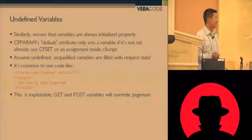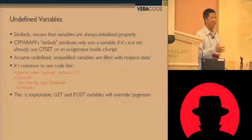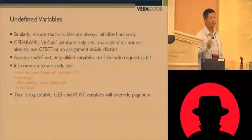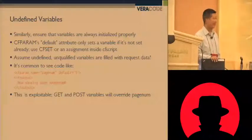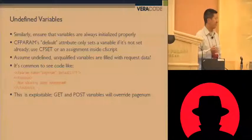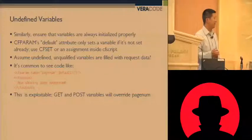For example, you have 'cfparam name equals page_num default equals one.' What that's going to do is say: if page_num is not already defined, then assign it the value one. Then you have a cf output tag that prints 'now showing page one.' The developer may be assuming the value is always going to be one unless they've already set it to something else, but basically it's going to be exploitable.